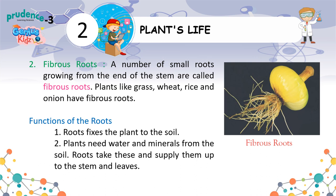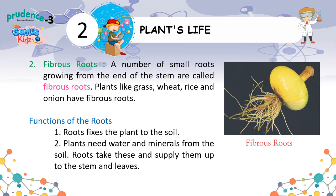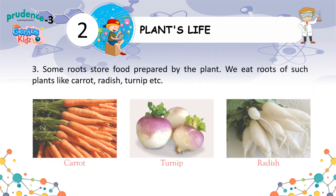Functions of the roots. 1. Roots fix the plant to the soil. 2. Plants need water and minerals from the soil. Roots take these and supply them up to the stem and leaves. 3. Some roots store food prepared by the plant. We eat roots of such plants like carrot, radish, turnip, etc.